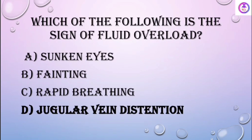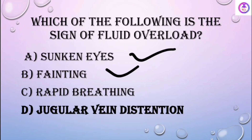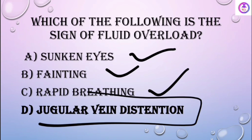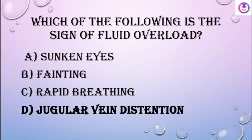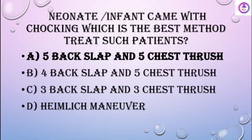Which of the following is a sign of fluid overload? Sunken eyes are a sign of dehydration. Fainting is not a sign. Rapid breathing is not a sign. Jugular vein distension is a sign of fluid overload.